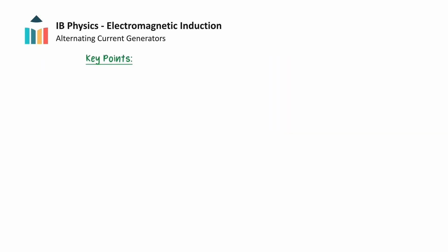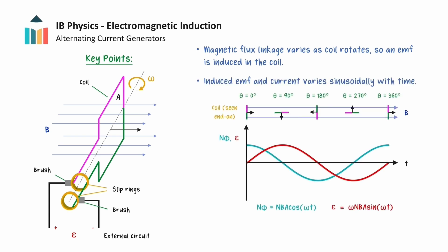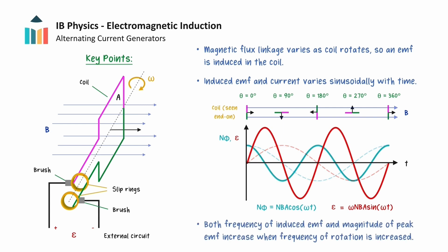We will now provide a final summary of the key understandings from this video. We saw that an alternating current generator consists of a coiled wire, usually with a large number of turns, that is made to rotate in a magnetic field. Such a motion induces an EMF in the coil from Faraday's law of induction. We found that this EMF varies sinusoidally with time, and this results in an alternating current that also varies sinusoidally with time. We concluded by showing that increasing the rotation speed of the coil will increase both the frequency of the induced EMF and the magnitude of the induced EMF.